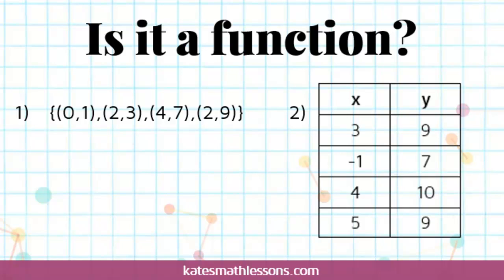The examples we just looked at were drawn as mappings, but a function can also be represented as a set of ordered pairs or as a table. When you have a set of ordered pairs, the x-values are always the input values and the y-coordinates are the output values. So: when I plug in 0, the output is 1; when I plug in 2, I get 3; when I plug in 4, it assigns to 7; and when I plug in 2, the output is 9.